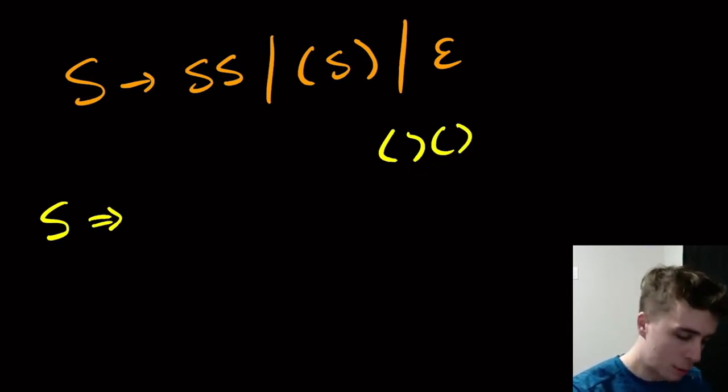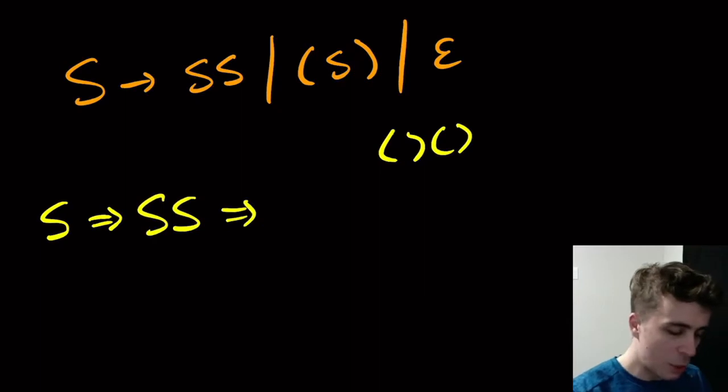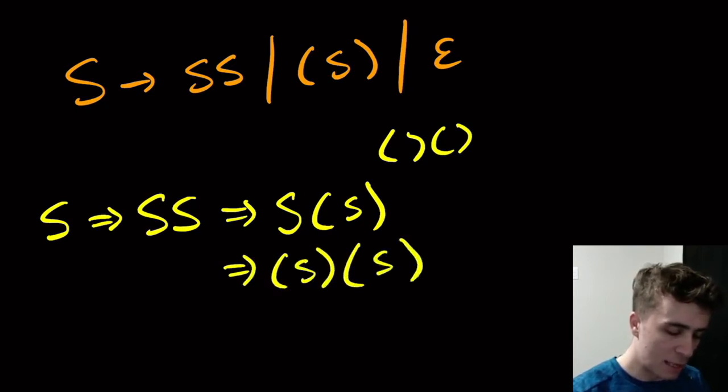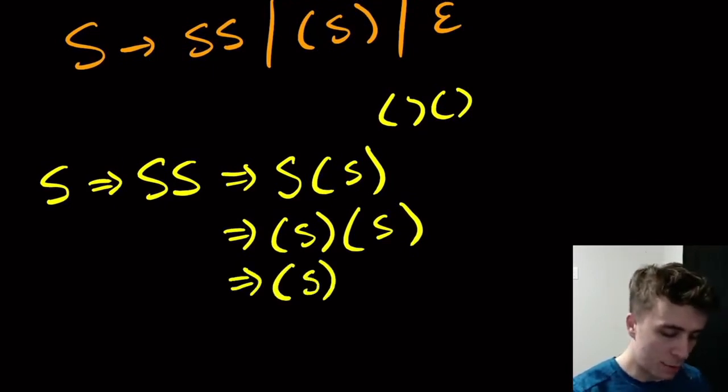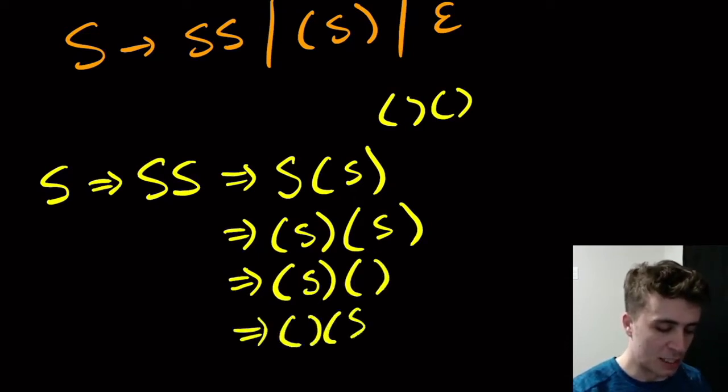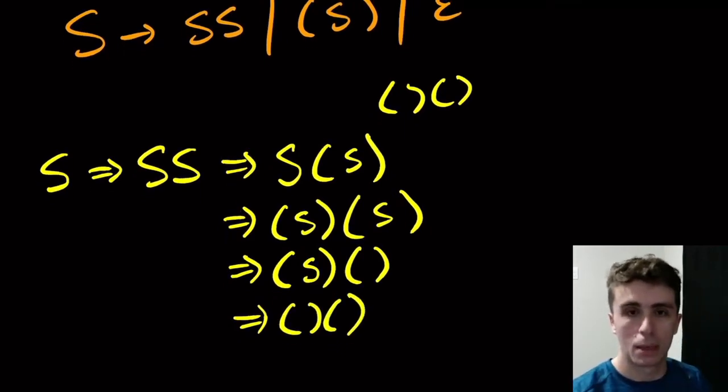I have a choice of whether I can apply the left S right to the first one or to the second one. So here I do the second one, and then I do the second one, and then I make one of the two S's go away. I make the second S go to empty and the first one go to empty. So that's one way to derive the string.